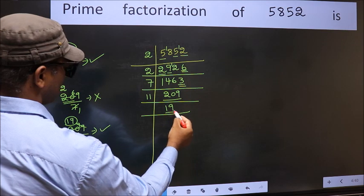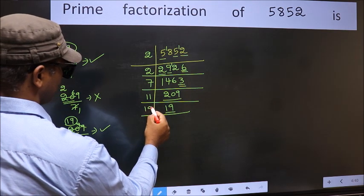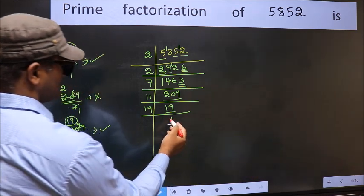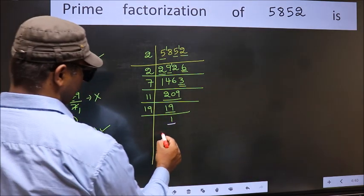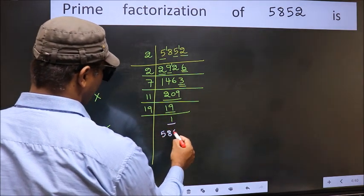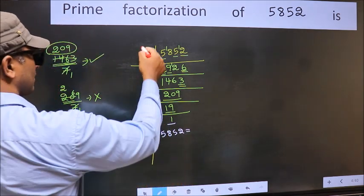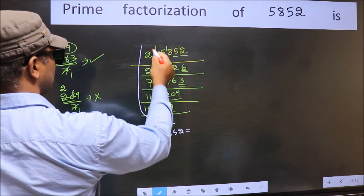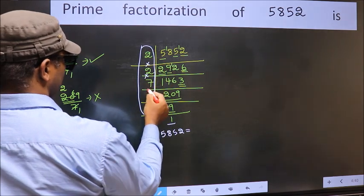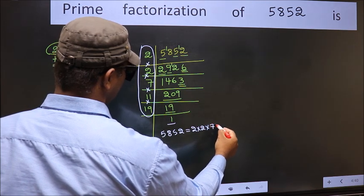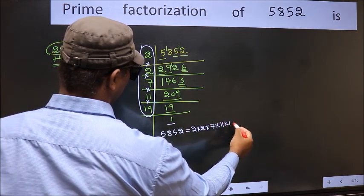Now we have 19. 19 is a prime number. So 19 once 19. So we got 1 here. So the prime factorization of 5852 is the product of these numbers. That is 2 times 2 times 7 times 11 times 19. This is the prime factorization of 5852.